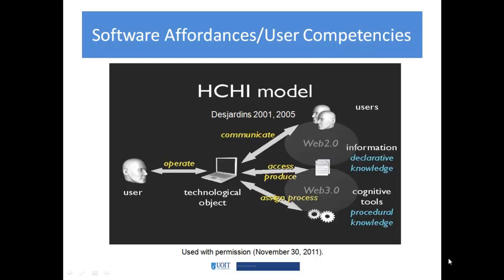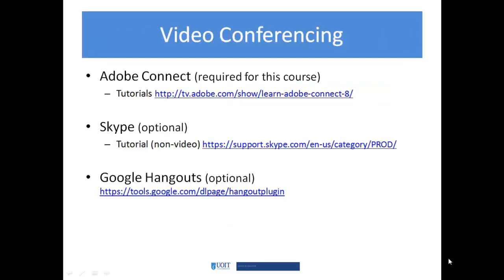We're going to take a look at some of the technology competencies required in this course and program, starting with video conferencing. The first one — and arguably the most important — is Adobe Connect. This program is entirely online and uses Adobe Connect for all synchronous communications. Everyone is asked to have the necessary computer resources and the ability to join and maintain an Adobe Connect session to participate in these classes.